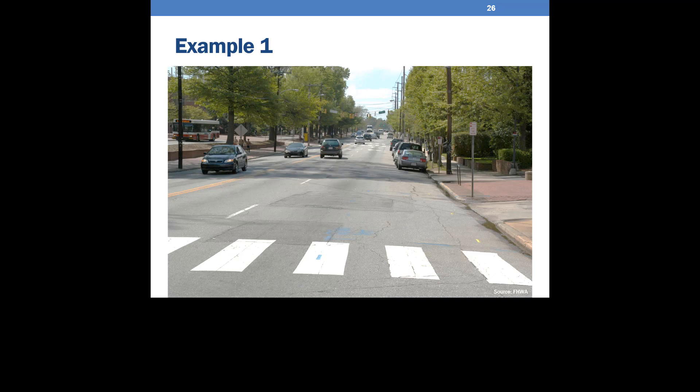Looking at the roadway a second time, which other features might we want to take into consideration? First, we see there is on-street parking, which can visually obstruct pedestrians at crossing locations. A crossing may need to be located a particular distance from the on-street parking, or some parking spaces may need to be moved to improve visibility and sight distance for pedestrians. Next, the presence of a bus indicates the presence of bus stops along the corridor. Providing a crossing location near a bus stop can help transit riders access their destination. Finally, we see that there is an intersection further down the road, and knowing the distance to the nearest intersection is important when deciding on a crossing location to ensure the crossing complies with local agency standards.